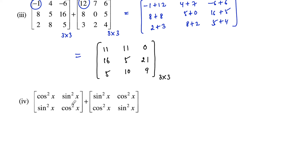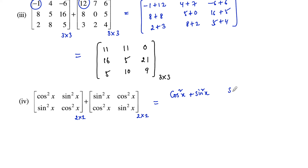Matrix: cos²x, sin²x, sin²x, cos²x, plus again sin²x, cos²x, cos²x, sin²x. Both are again 2 by 2 matrices. Adding corresponding elements: cos²x plus sin²x for the first element, cos²x plus cos²x for the second element, sin²x plus cos²x for the third element.